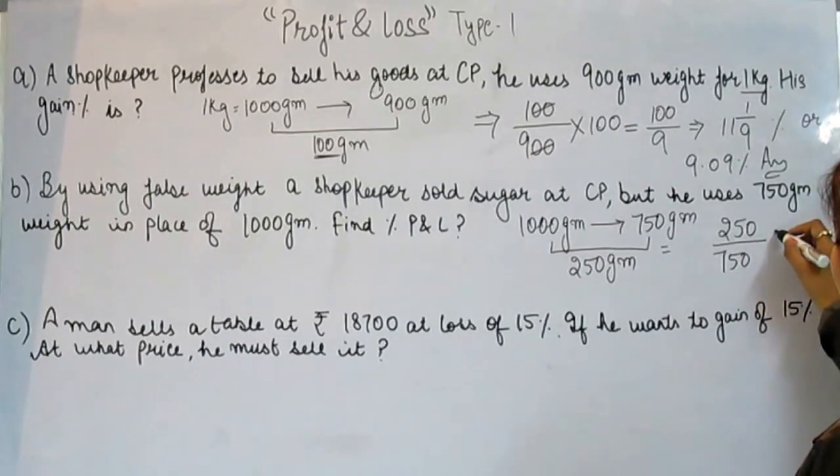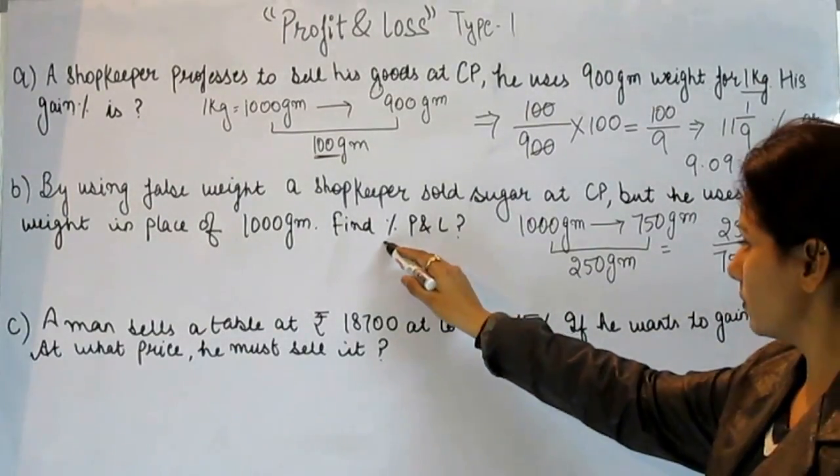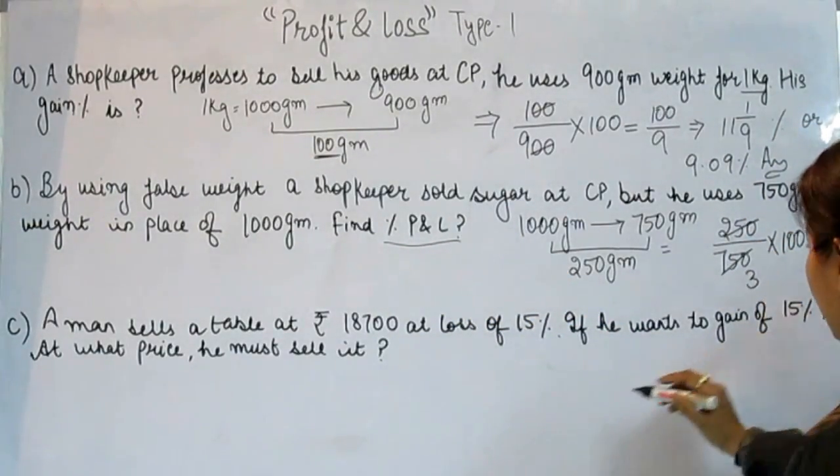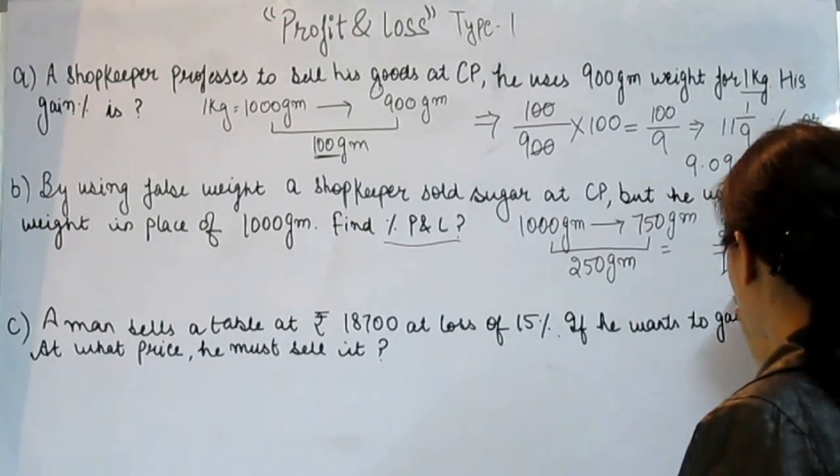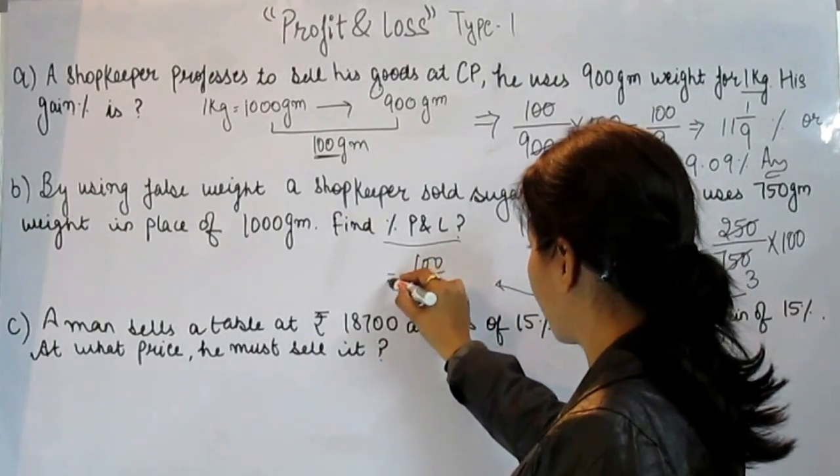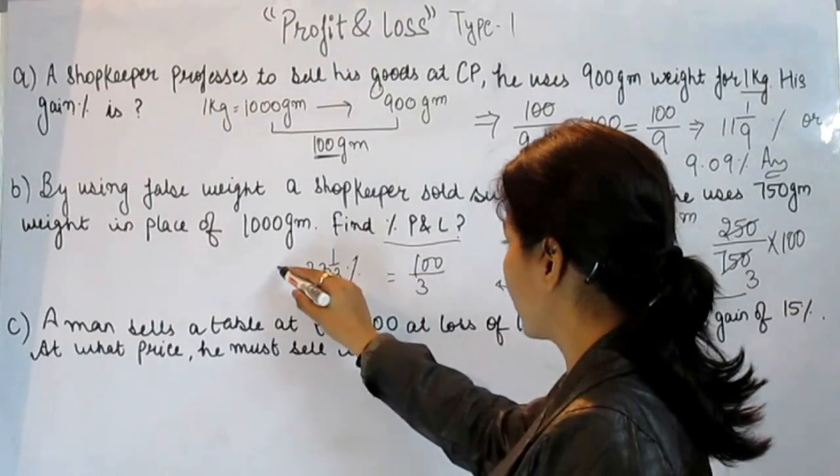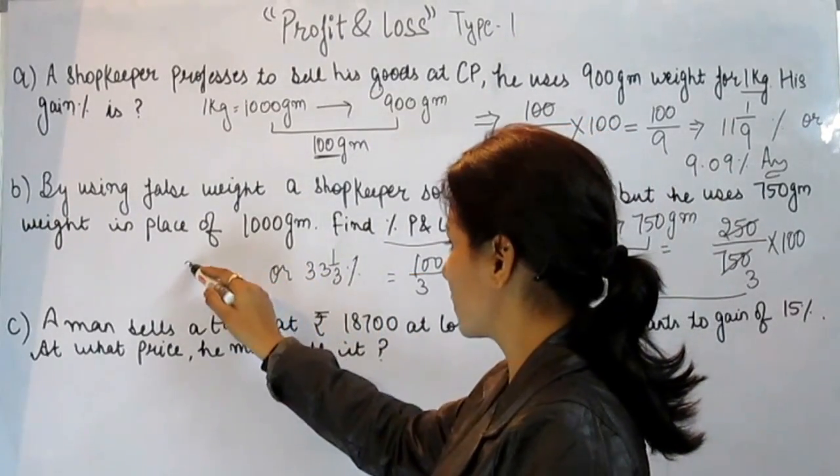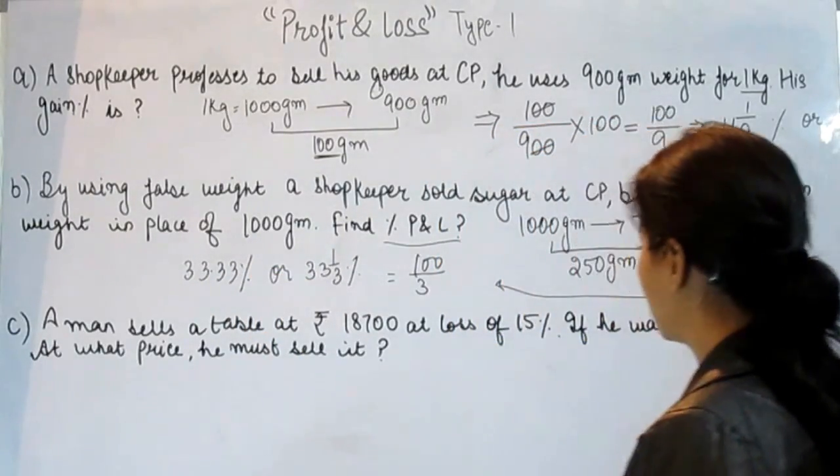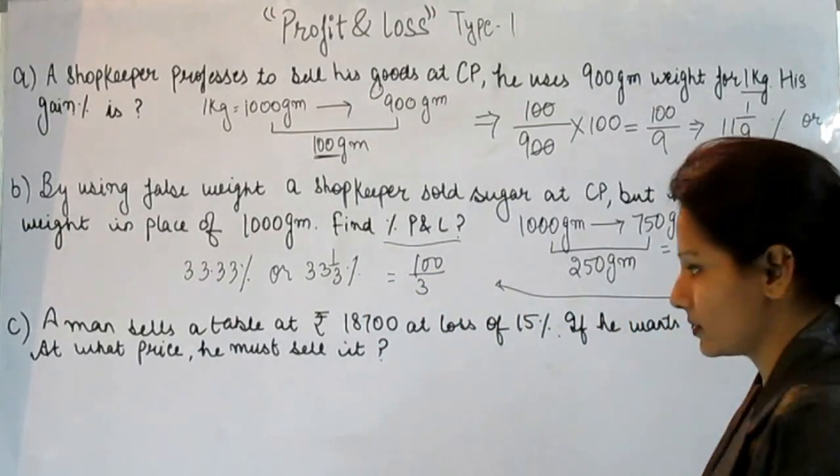On 750 grams, he is getting profit of 250 grams. On 100, it's 100 by 3. That is 33 and 1/3 percent, or 33.33 percent. He is in profit of 33 and 1/3 percent.